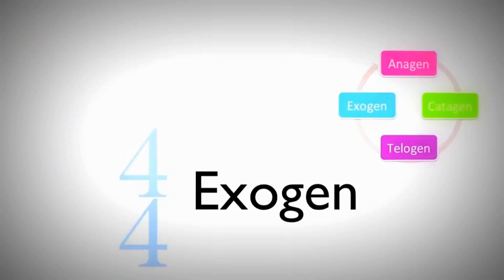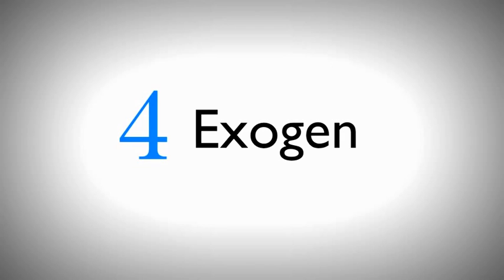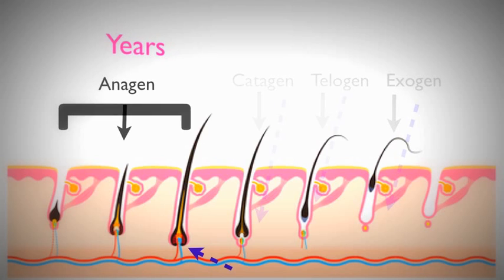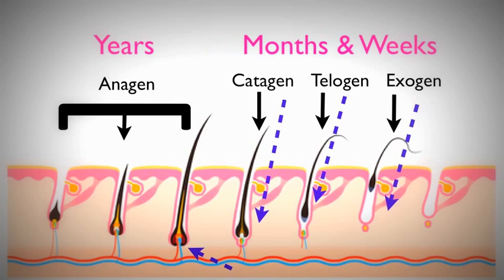After telogen, we have exogen. This is the phase where the hair is shed or falls from the follicle. Anagen is by far the longest part of the hair growing process — anagen phases last for years at a time. By contrast, catagen, telogen, and exogen phases are really short and usually only last weeks or months at a time.